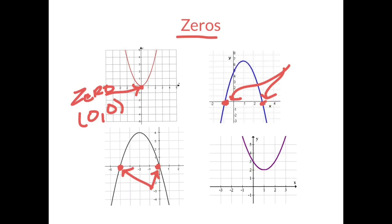And then at last, I have this other very interesting parabola. I know it's a parabola because it looks like a u, but this parabola never crosses the x-axis. So for this parabola, we say there are no zeros.